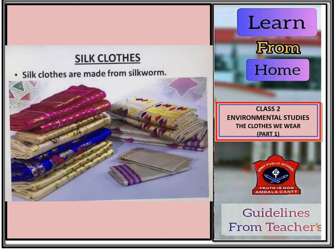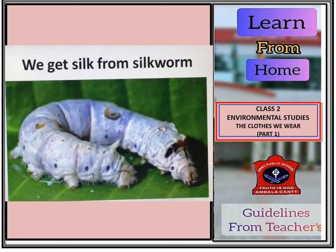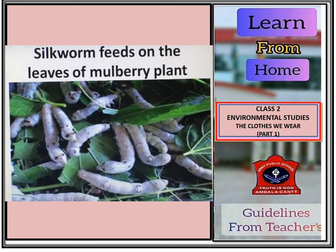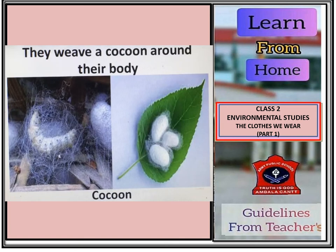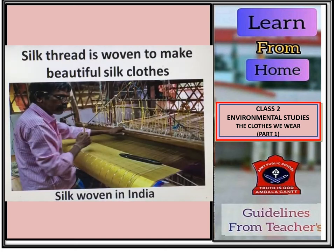Next type of clothes are silk clothes. Your mother wears colorful silk saris in functions. These beautiful saris are made from silk. Silk clothes are made from an animal called silkworm. You can see in the picture how the silkworm looks. Silkworm feeds on the leaves of the mulberry plant. After eating the leaves, they weave a cocoon around their body. You can see the thread around the silkworm's body which helps to make the cocoon. From this cocoon, we get silk thread. Silk thread is woven by the weaver to make beautiful silk clothes.